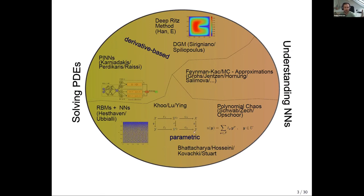One approach I want to discuss is physics-informed neural networks, where you're trying to find a network that represents essentially the solution of your PDE. Given some PDE, you try to find it through stochastic gradient descent-based methods. You do this by combining the network with a loss function that also contains some derivatives, evaluate at certain points, and try to minimize how far off you currently are from the actual PDE.